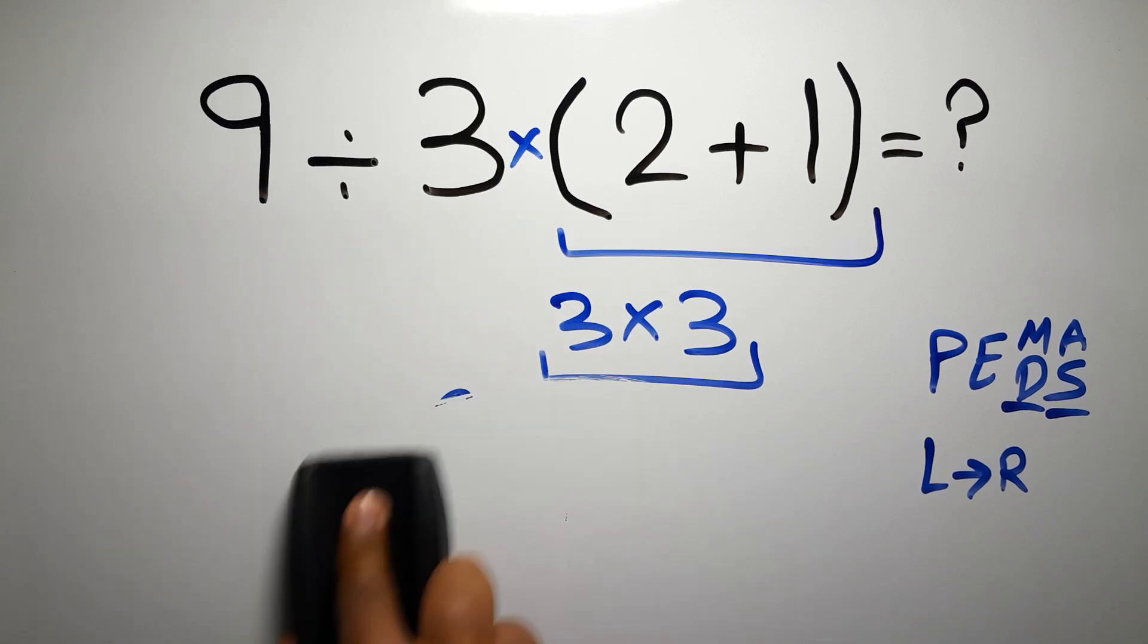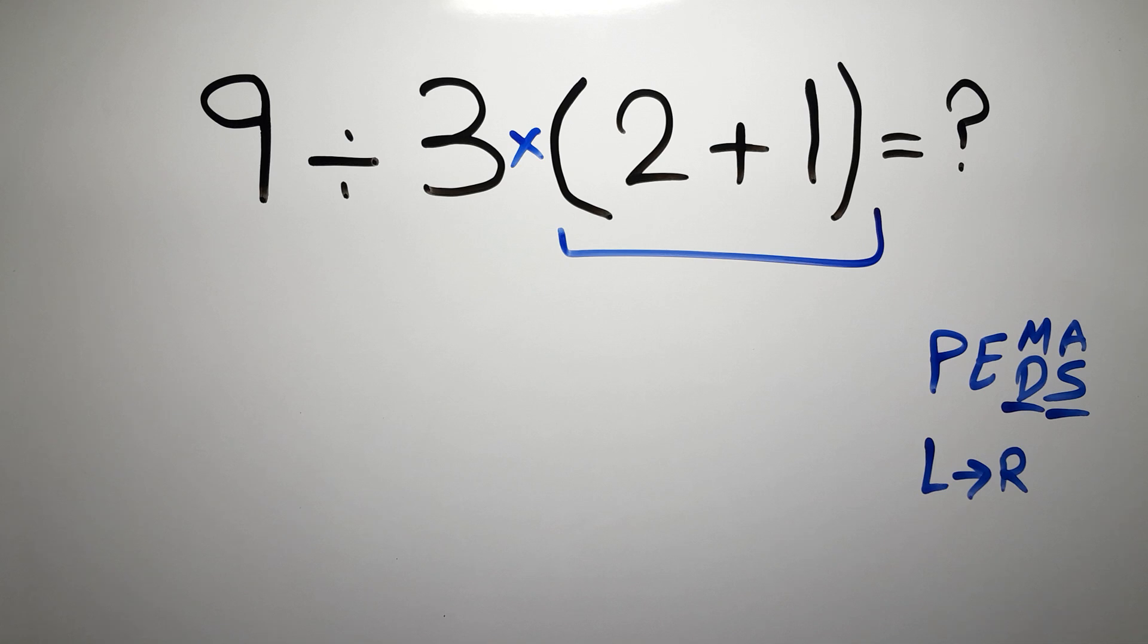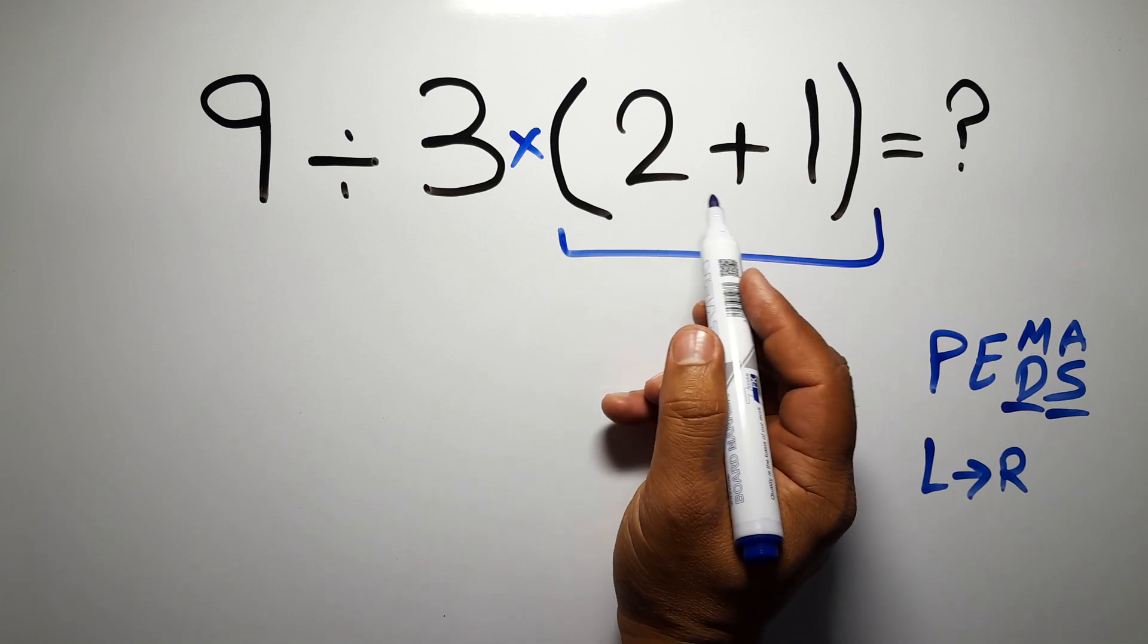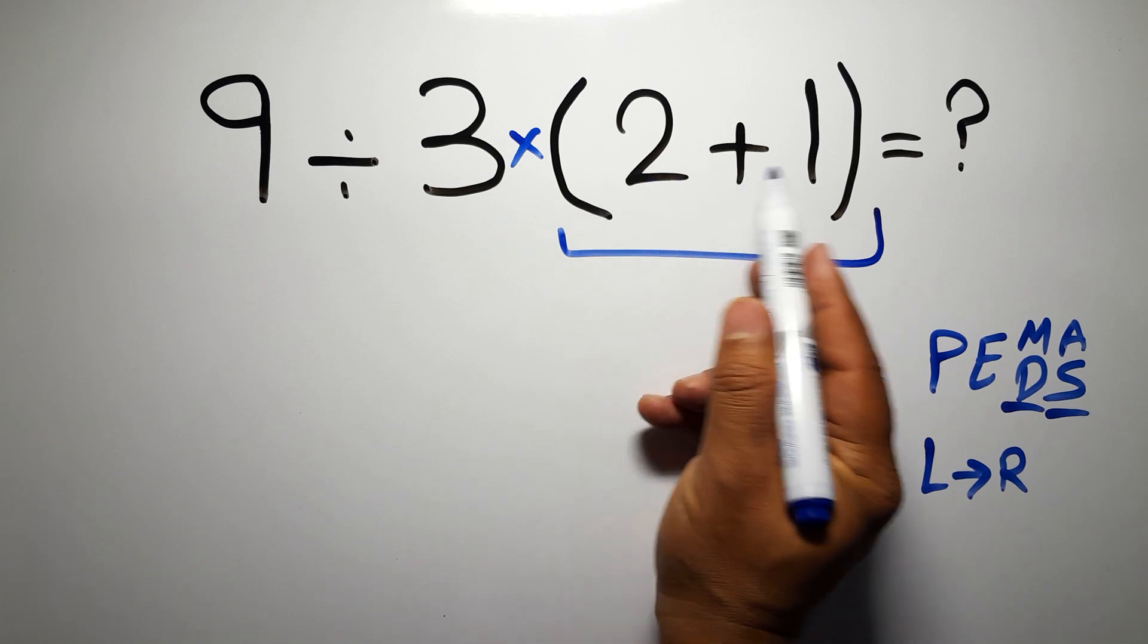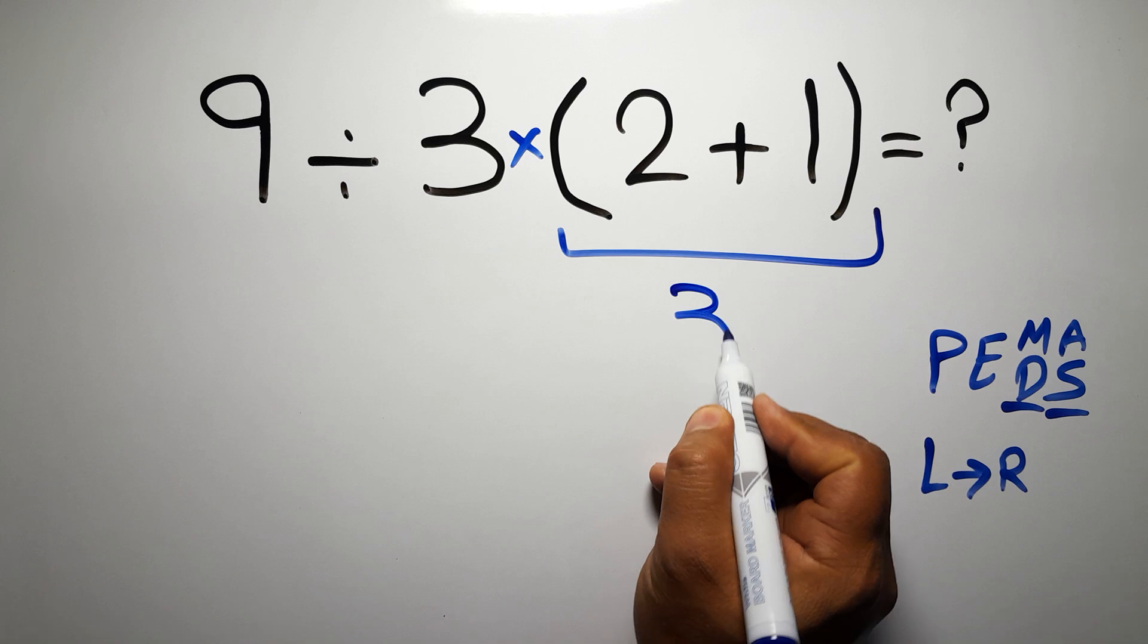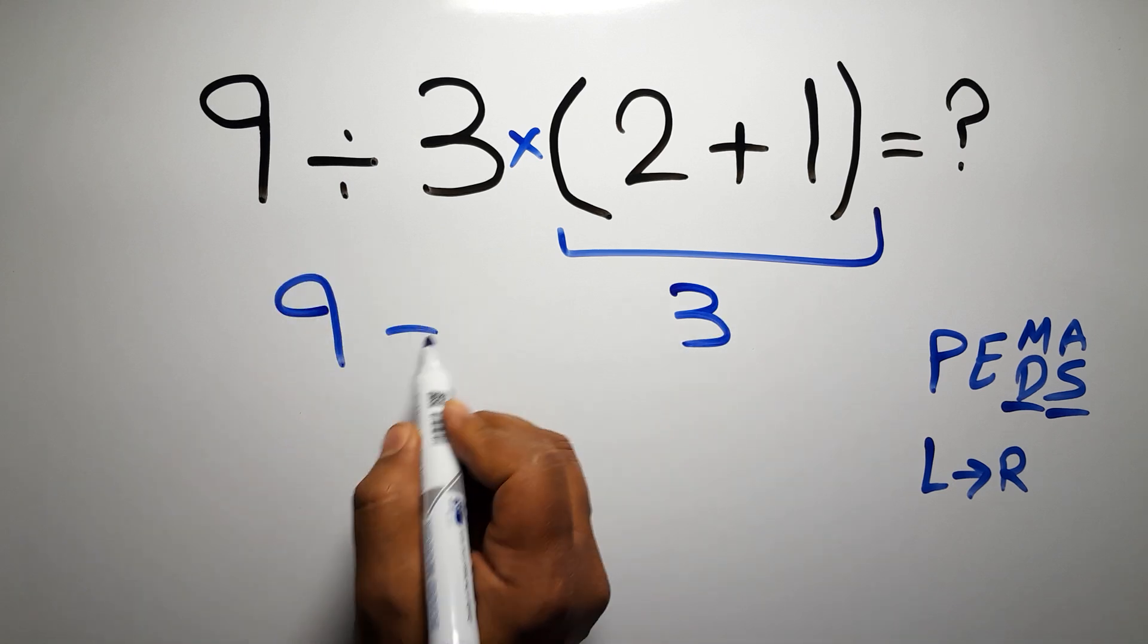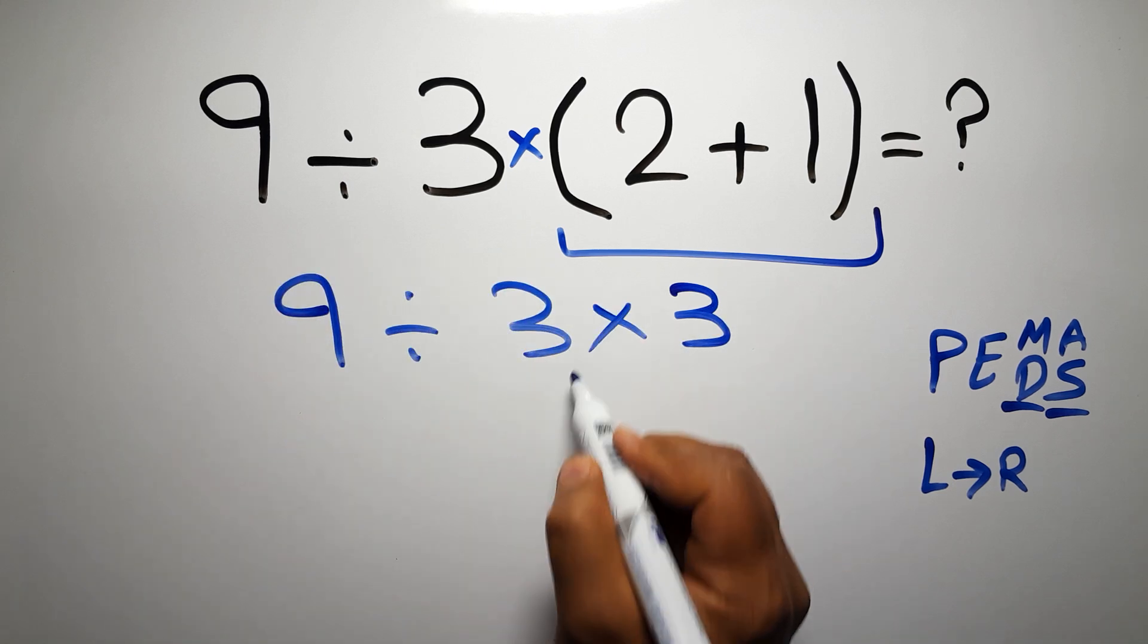So first this parentheses. Inside this parentheses we have 2 plus 1, which equals 3, so 9 divided by 3 times 3.